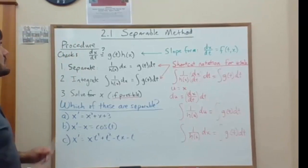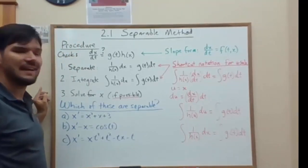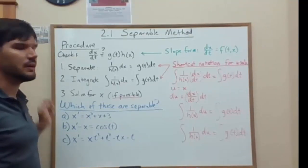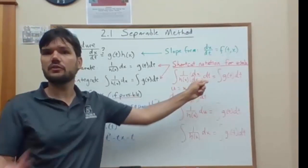First, the procedure is to check that you can separate the equation, which means that you write it in slope form, where the slope form is the derivative equal to a function of the two variables.